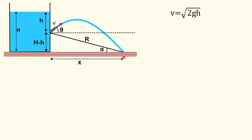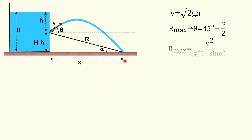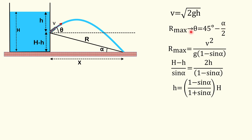In the right-angle triangle, we are not changing the height and we want to maximize the base x. If the base is maximum, the hypotenuse R is also maximum. So we can use the result for maximum range of a projectile going down an incline: the angle theta of the projectile with the horizontal is 45° minus α/2, and the maximum range is R_max = v²/[g(1 − sin α)].